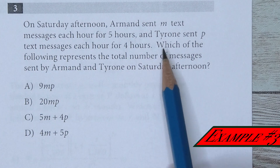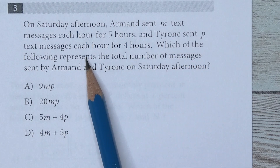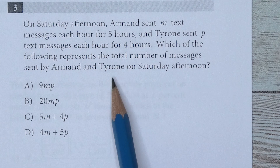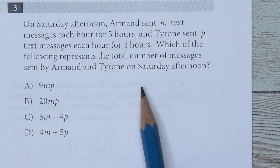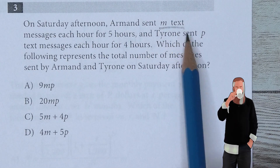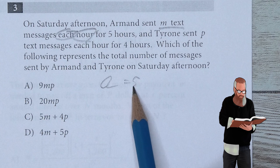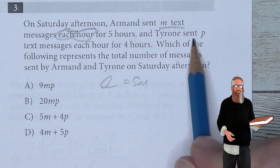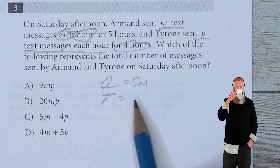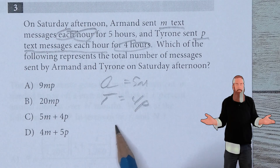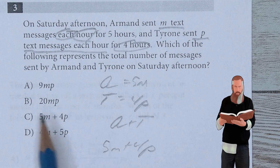On Saturday afternoon, Armin sent m text messages each hour for five hours, and Tyrone sent p text messages each hour for four hours. Which of the following represents the total number of messages sent? Armin equals five m, and Tyrone equals four p. We're looking for A plus T, so we wind up with five m plus four p, which is C.